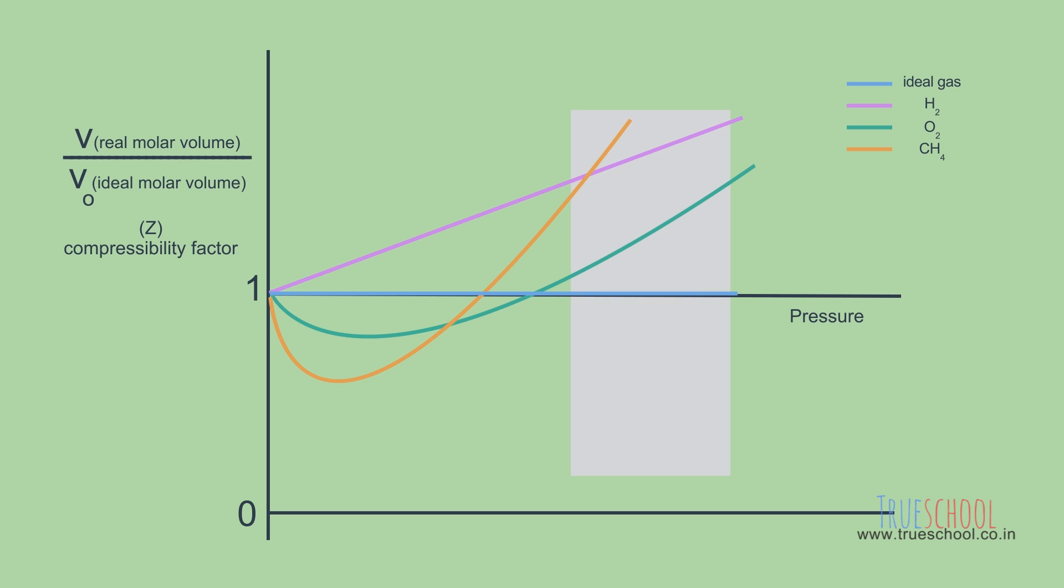Gases at very high pressure get very close to each other and hence it becomes difficult to compress them compared to ideal gas. Hence in this range its Z factor is greater than 1, as 1 mole of this gas will tend to occupy more volume compared to ideal gas due to dominating repulsive forces.